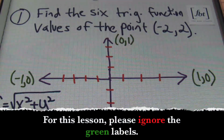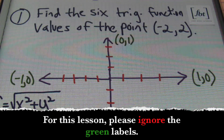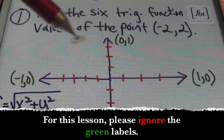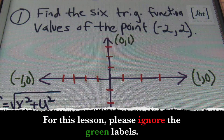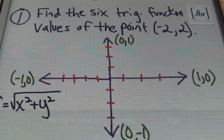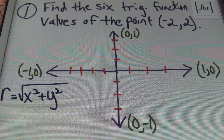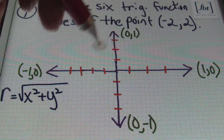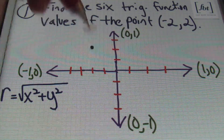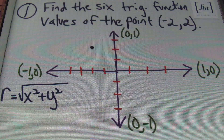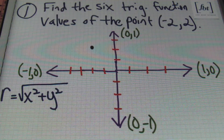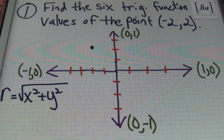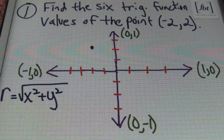Here in problem number one, it says find the six trig function values of the point negative two, two. Notice I have my rectangular coordinate system already mapped out here, and I'm going to plot the point negative two, two. Starting at the origin, I'll be moving two places to the left, and then up two, to have a point right here. This point lies in the second quadrant where my x value is negative and my y value is positive.